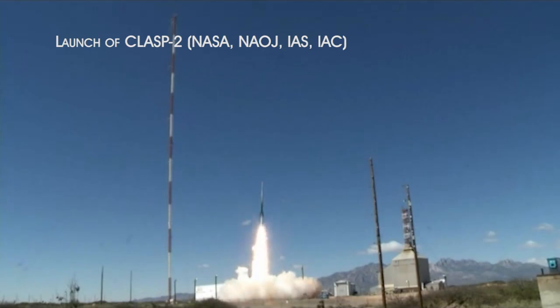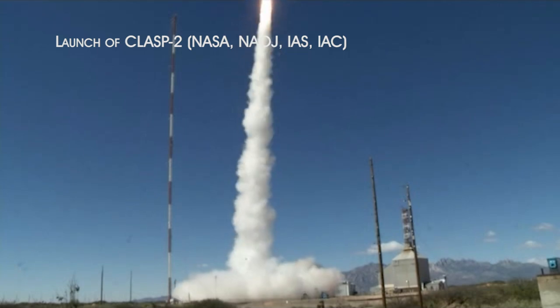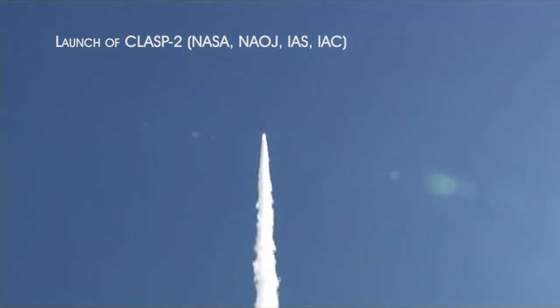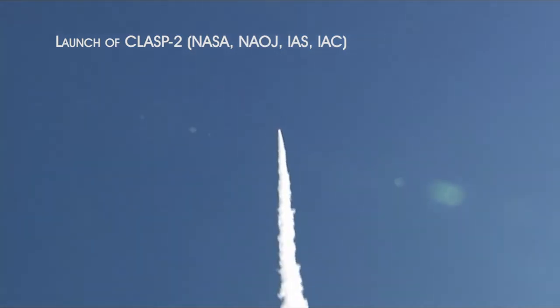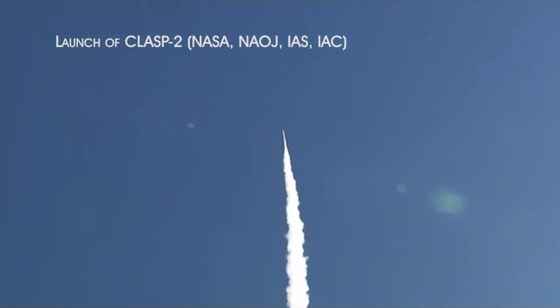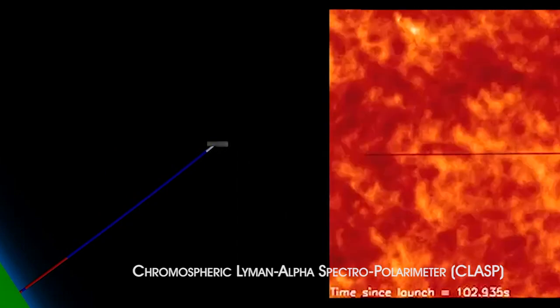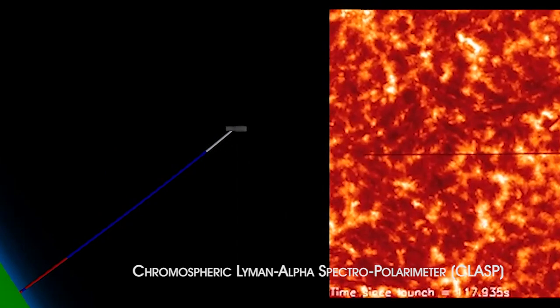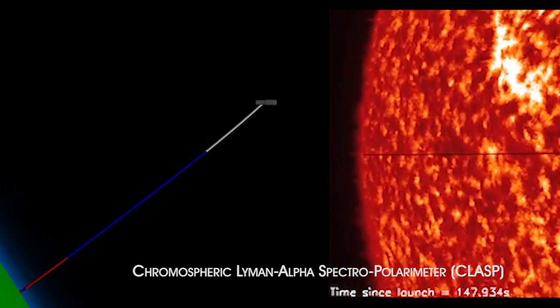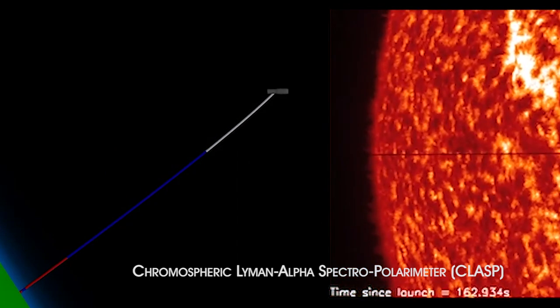Our theoretical research motivated the development of a series of NASA suborbital rocket experiments called CLASP. These unprecedented ultraviolet spectropolarimetric observations allow us to investigate the magnetism and geometrical complexity of the upper solar chromosphere.